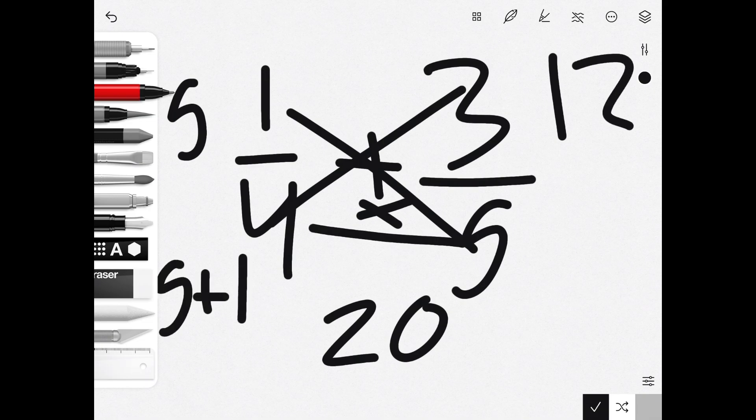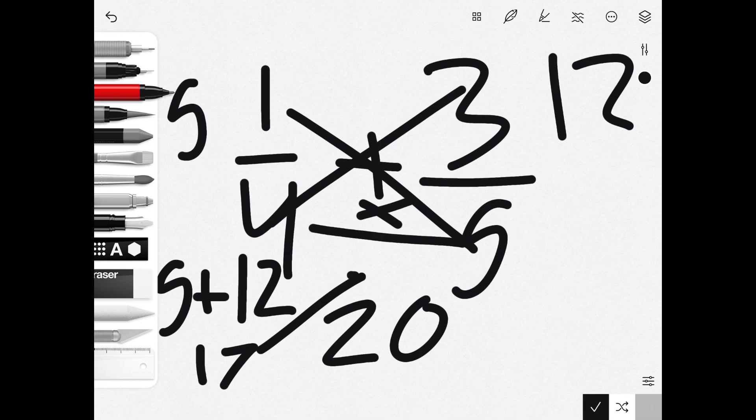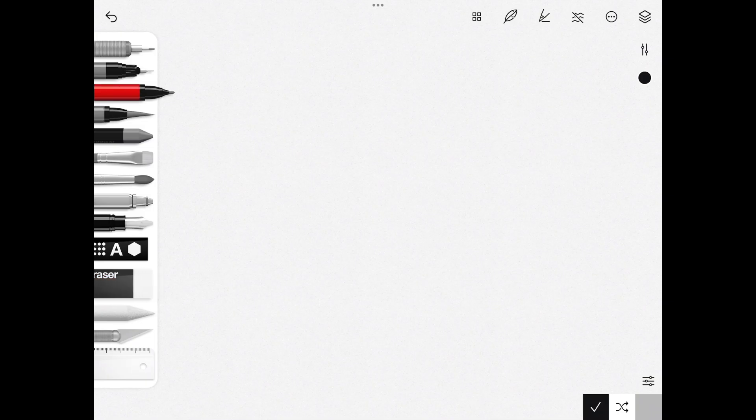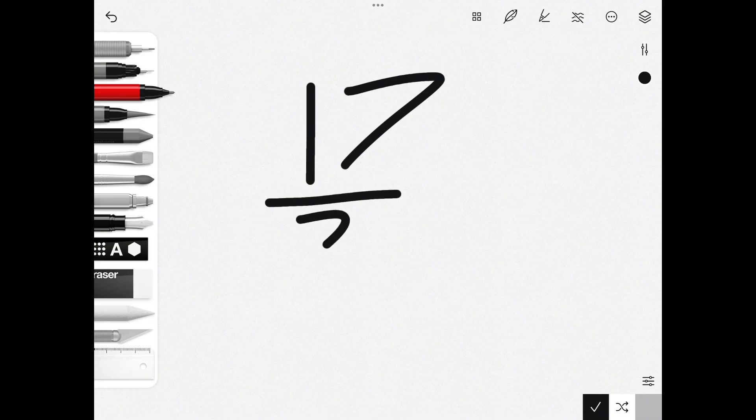So we do 5 plus 12, and that equals 17. Now that we've got both numbers, we bring the 17 above the 20. So the answer is 17/20.